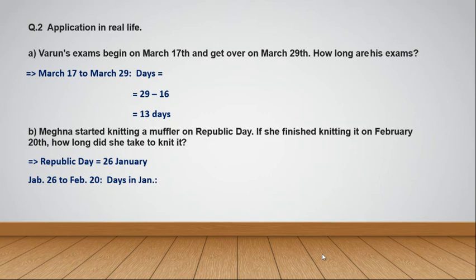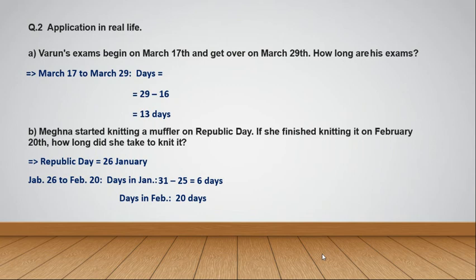There are 31 days in January and the starting date is the 26th, so we need to subtract the first 25 days. That gives 6 days from January. The ending date is February 20th, so in February there are 20 days. The total number of days is 6 plus 20, which equals 26 days.